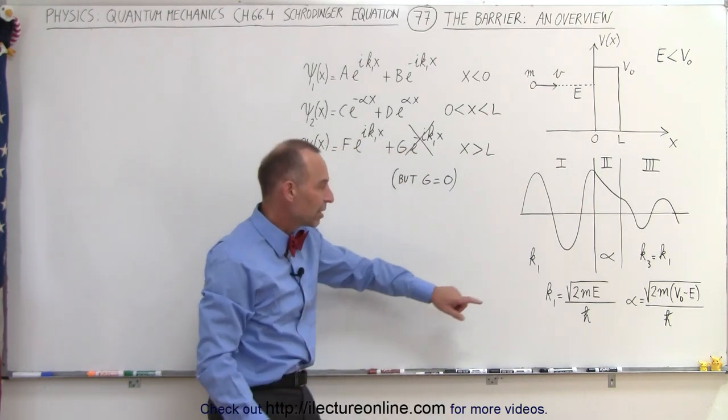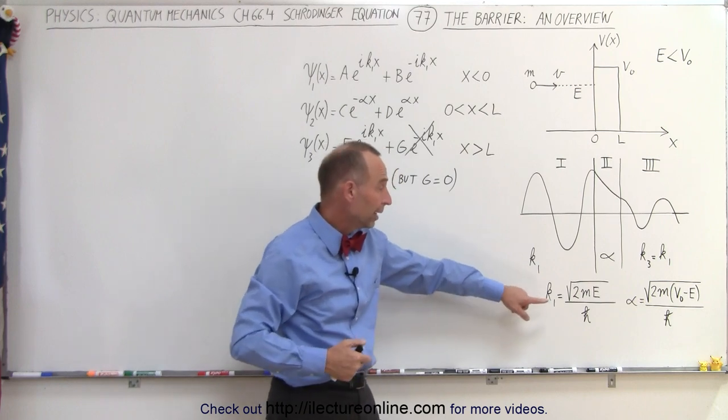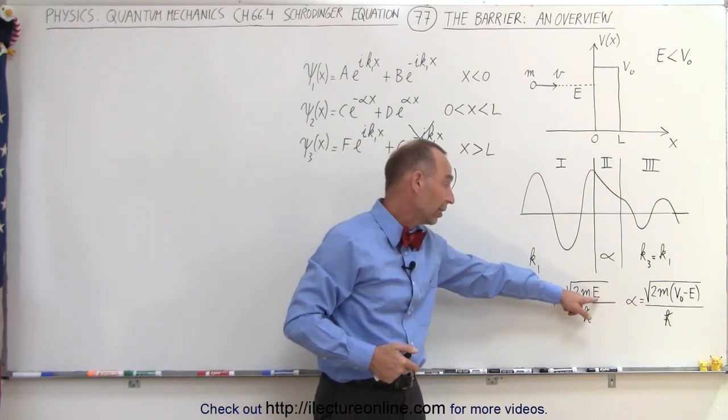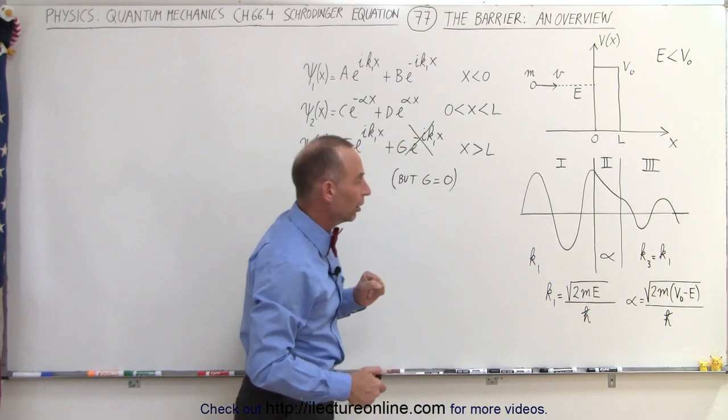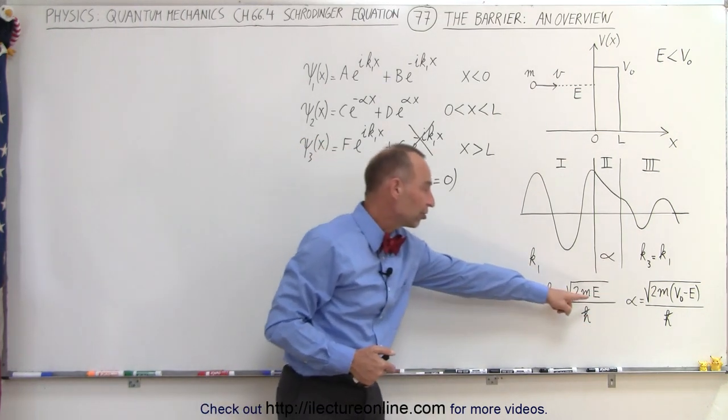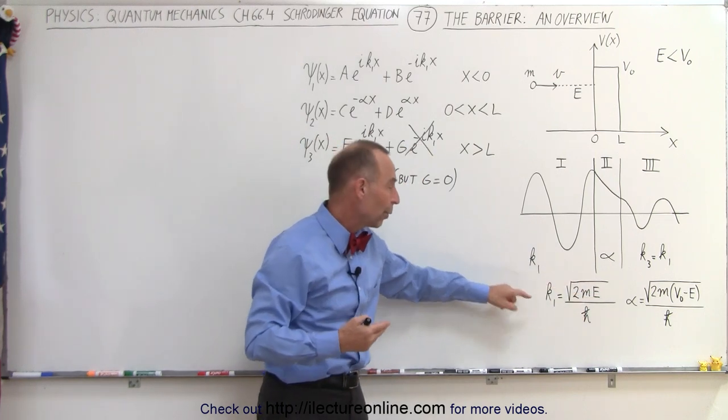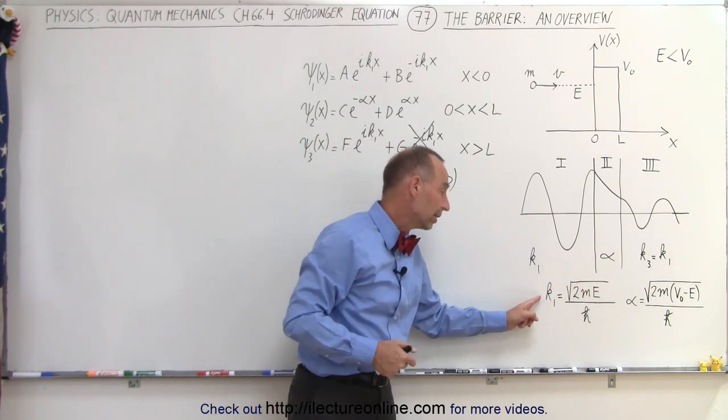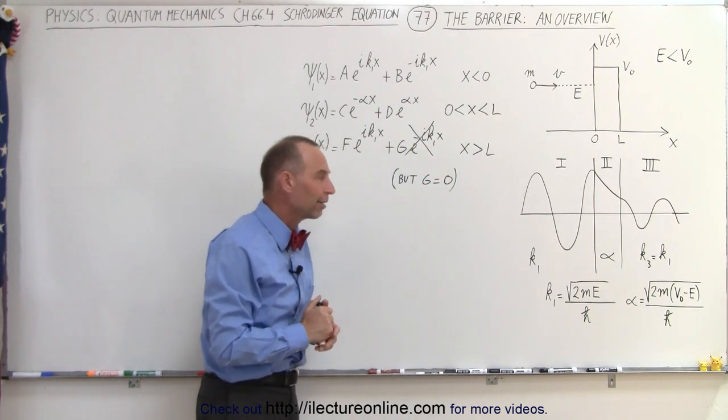Now notice that here's the equation that tells us what the wave number is in region 1 and in region 3. It's 2m times the energy of the particle, which takes the square root of that, divided by h bar. So depending upon how much energy the particle has, it will increase or decrease the wave number. Higher energy means a larger wave number means a shorter wavelength or a higher frequency.